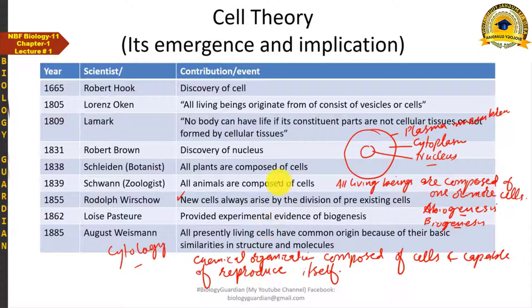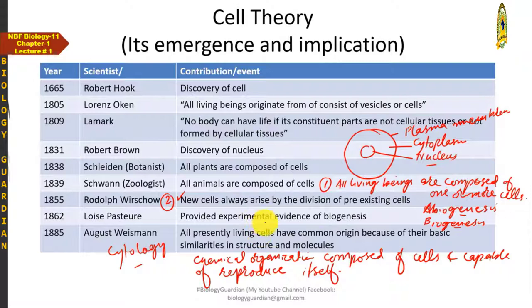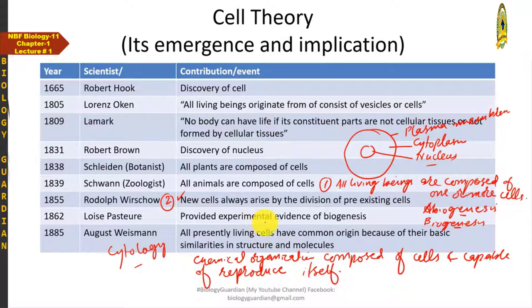This is how cell theory developed. In its present-day form, cell theory consists of three points: first, all living beings are composed of cells; second, new cells always arise by the division of previously existing cells; and third, cell is the fundamental structural and functional unit of an organism. These three statements together constitute the modern cell theory.